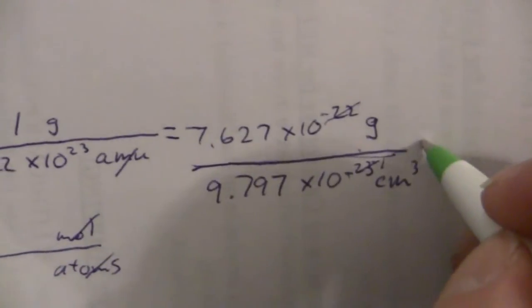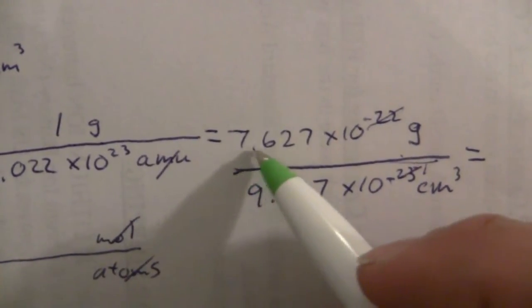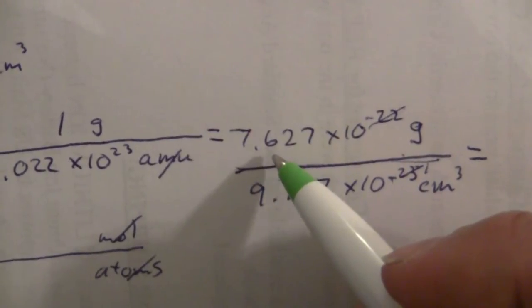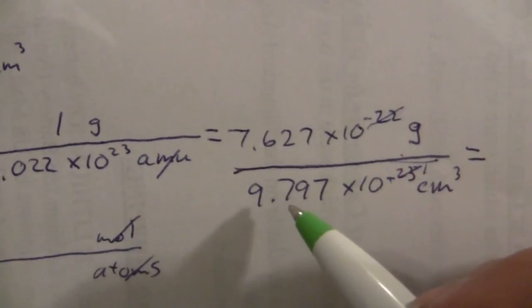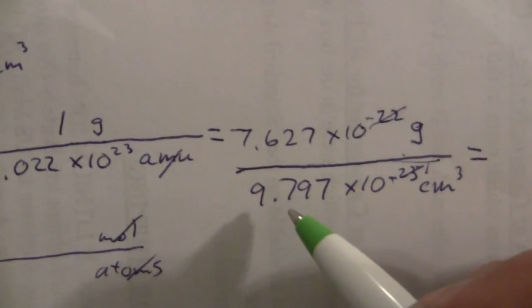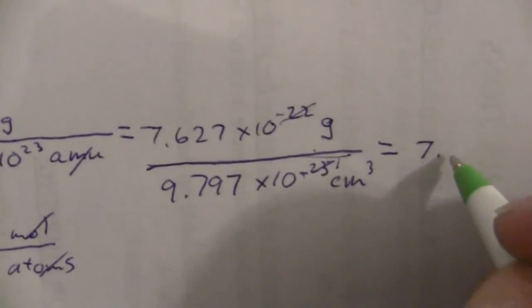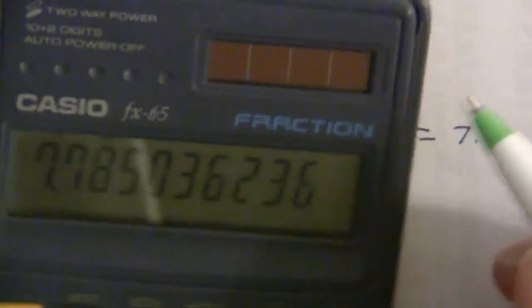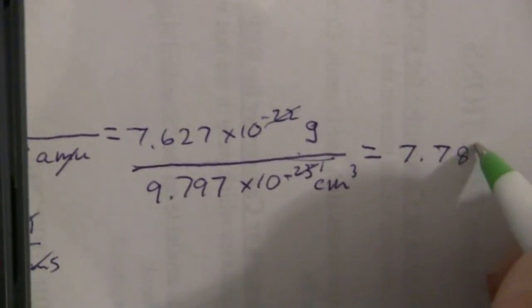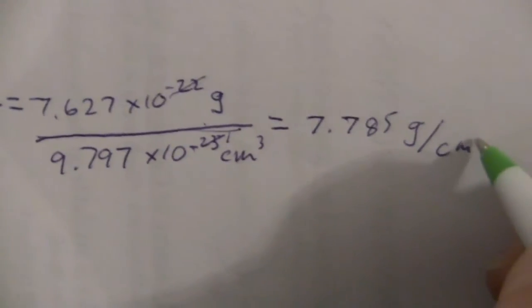And you'll end up with 10 to the minus 1 down there. So in the end, when we do this, it'll be like taking 7.627 divided by this times 10 to the minus 1, or 0.9797. So here we'll have 7.785 grams per cubic centimeter.